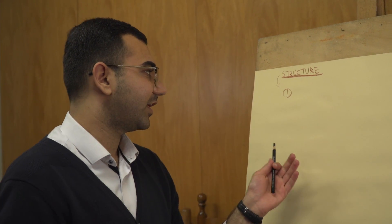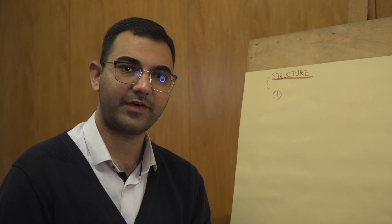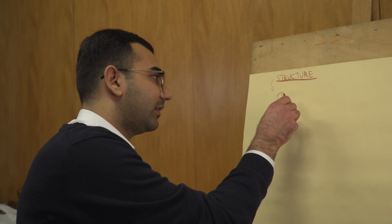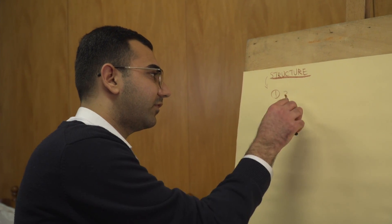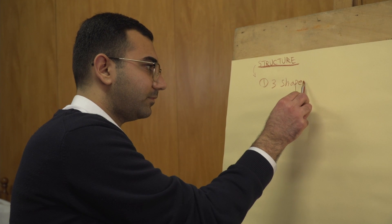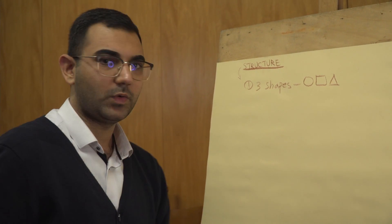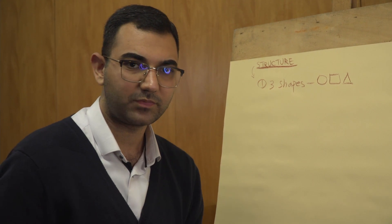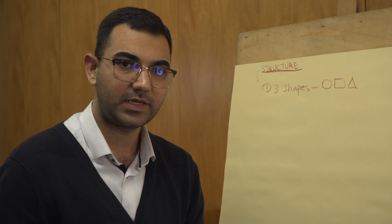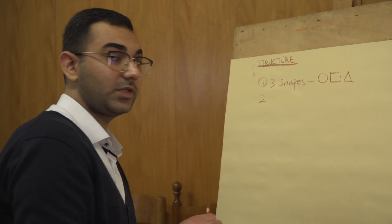Structure is a process of translation. Whenever you see the model, you have to translate it into forms and volumes. Our three important forms and shapes are circle, square, and triangle — we've talked about all of them in previous sessions. Here I want to explain in detail what they are and practically how we can use them.